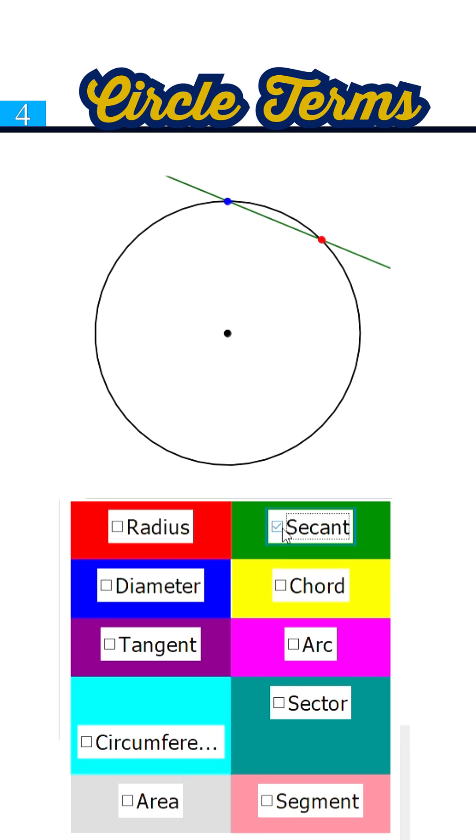Secant, a line that cuts right through the circle, touching it at two points. Chord, a line segment joining two points on the circle's edge.